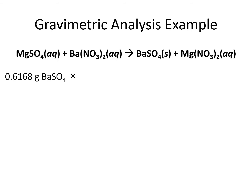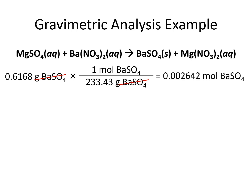First we're taking our known amount, 0.6168 grams of barium sulfate, and converting it from grams into moles by dividing by the molar mass of barium sulfate, which is 233.43. We come out with 0.002642 moles of barium sulfate, which is how many moles of product we got out of the reaction.